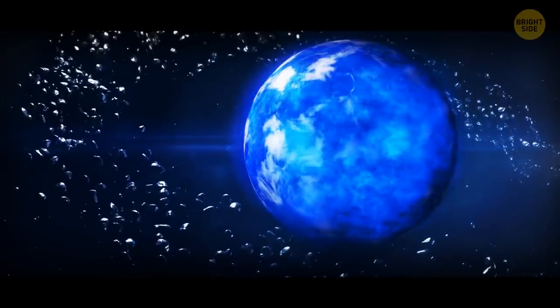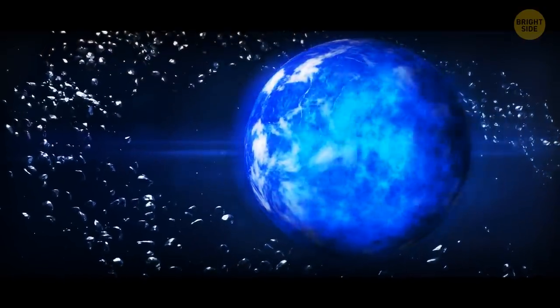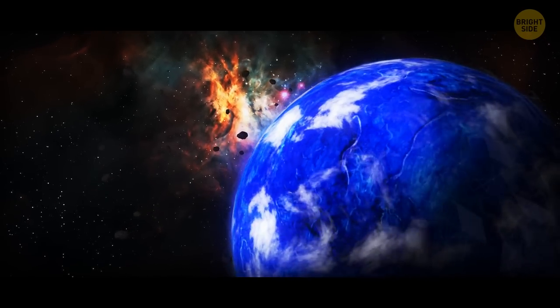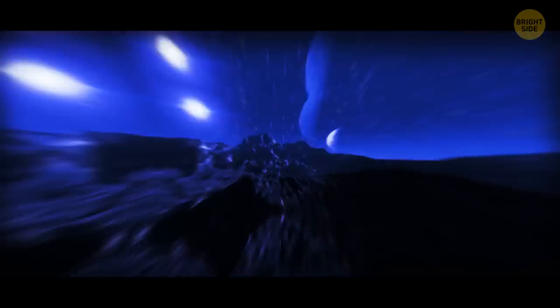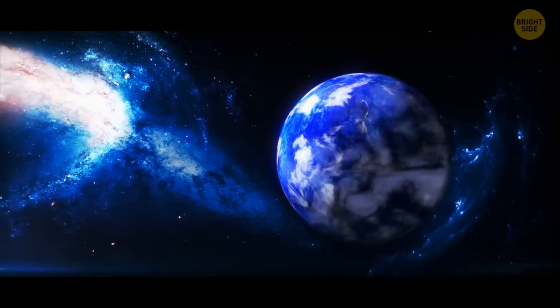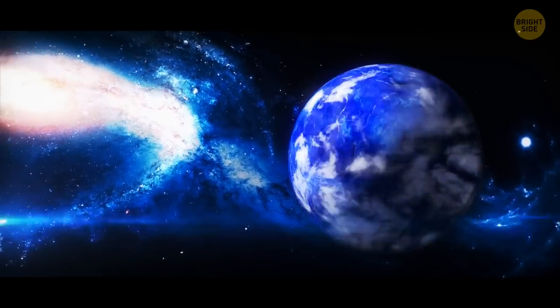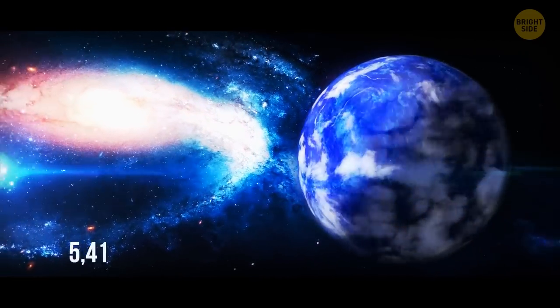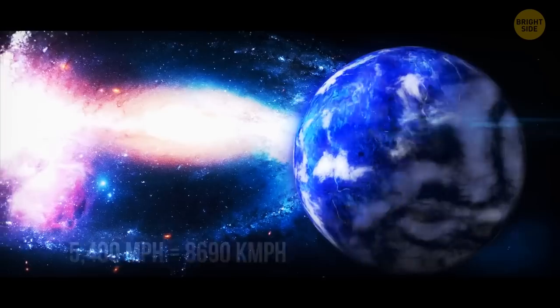This atmosphere contains silicates that condense when heated. In other words, the clouds on this planet have rain made of glass. Yes, it rains hot glass shards here. Oh, and if that's not enough, there's a raging wind on the surface, which is moving at a speed of 5400 miles per hour. Just to compare, the fastest wind on Earth had a speed of 254 miles per hour, about 20 times weaker.